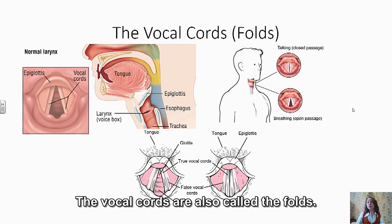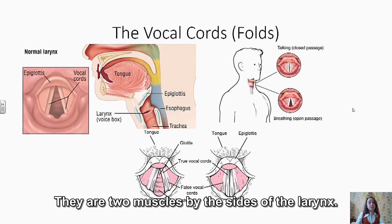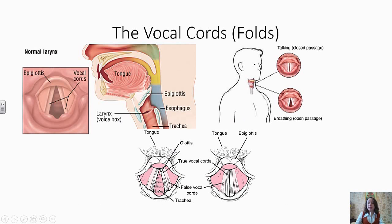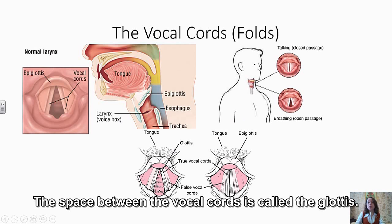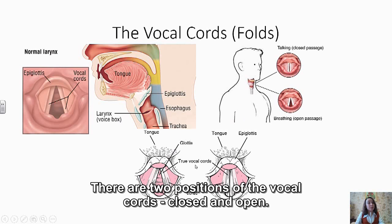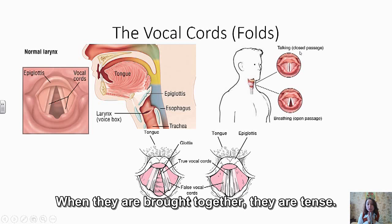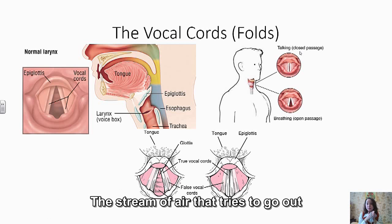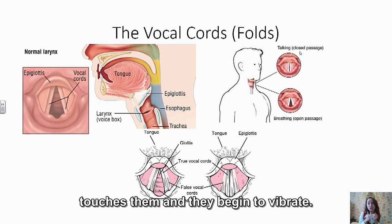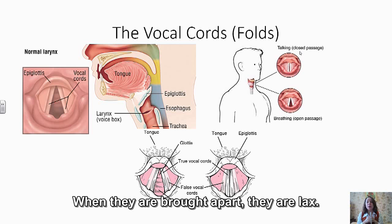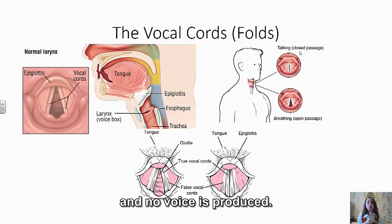The vocal cords are also called the vocal folds. They are two muscles on the sides of the larynx. The space between the vocal cords is called the glottis. There are two positions of the vocal cords: closed and open. When they are brought together, they are tense — the stream of air touches them and they begin to vibrate, producing voice. When they are brought apart, they are lax — the stream of air goes out freely and no voice is produced.